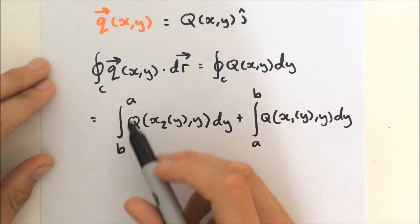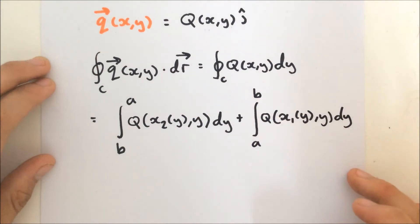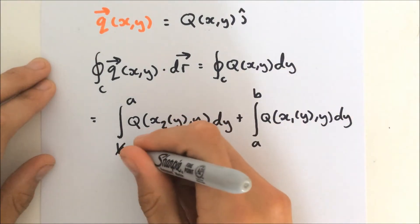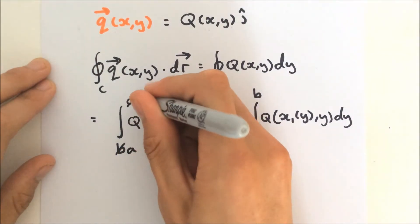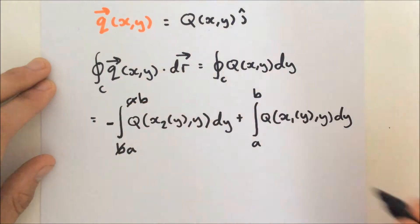But again, we want to have the same limits here for our integration, so this simply becomes an A, that becomes a B, and this becomes a minus.